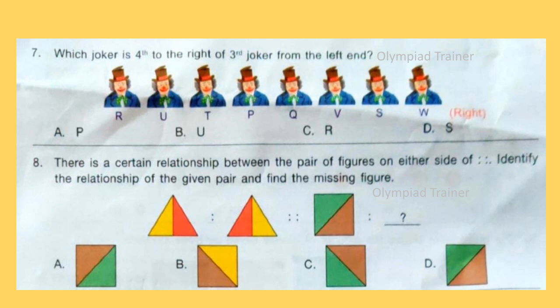Question 8: There is a certain relationship between the pair of figures on either side. Identify the relationship of the given pair and find the missing figure. Now look at the figures carefully. Yellow is replaced by orange, orange is replaced by yellow. Similarly, if we replace green by brown and brown by green, we will get Option A as the answer.